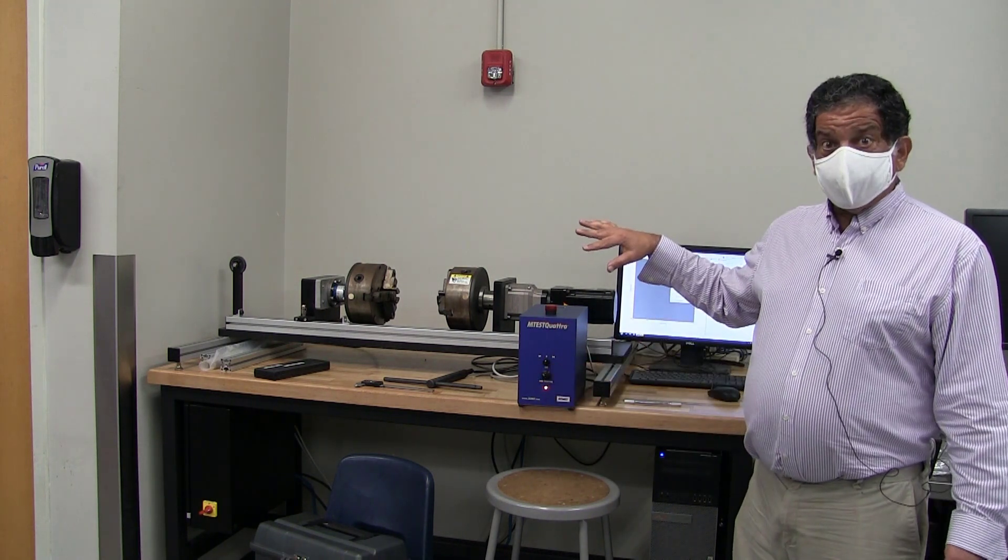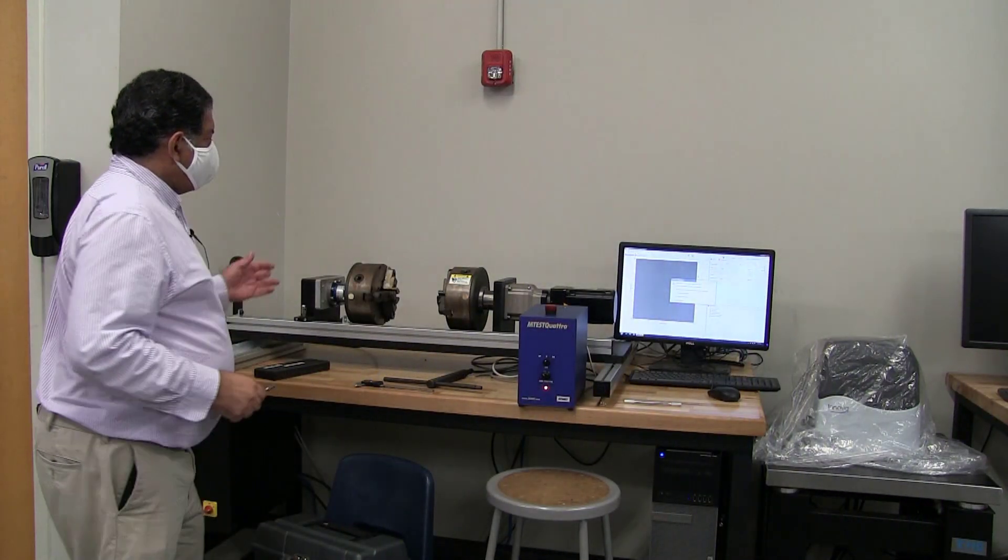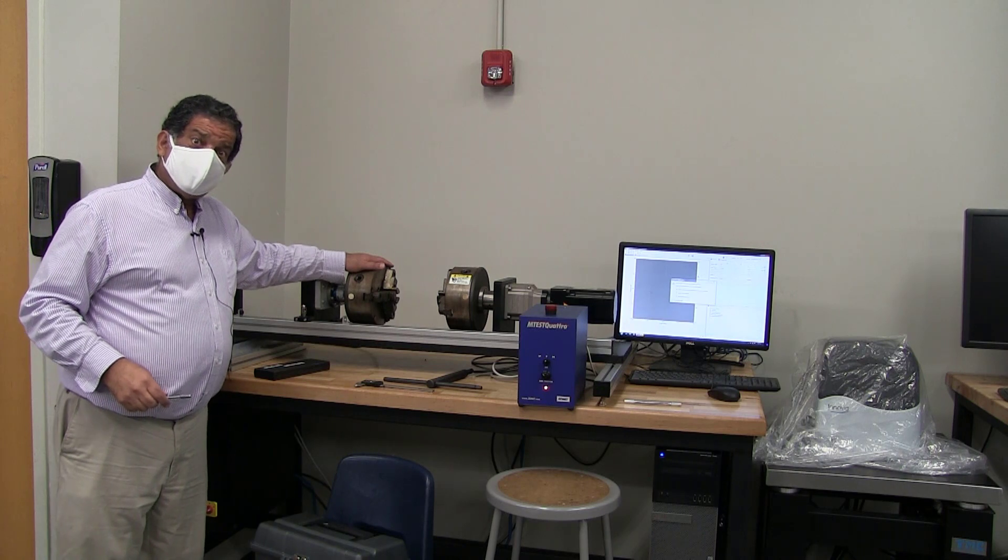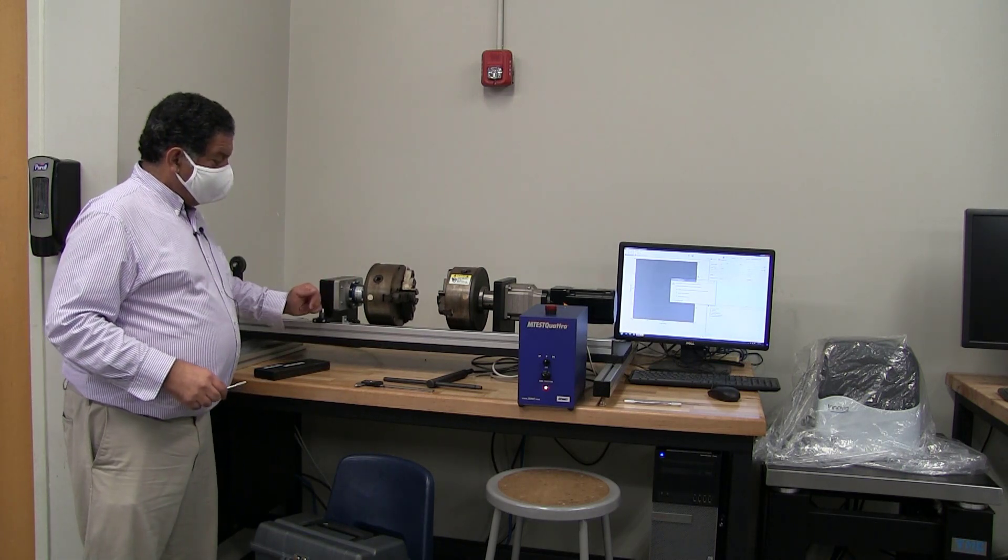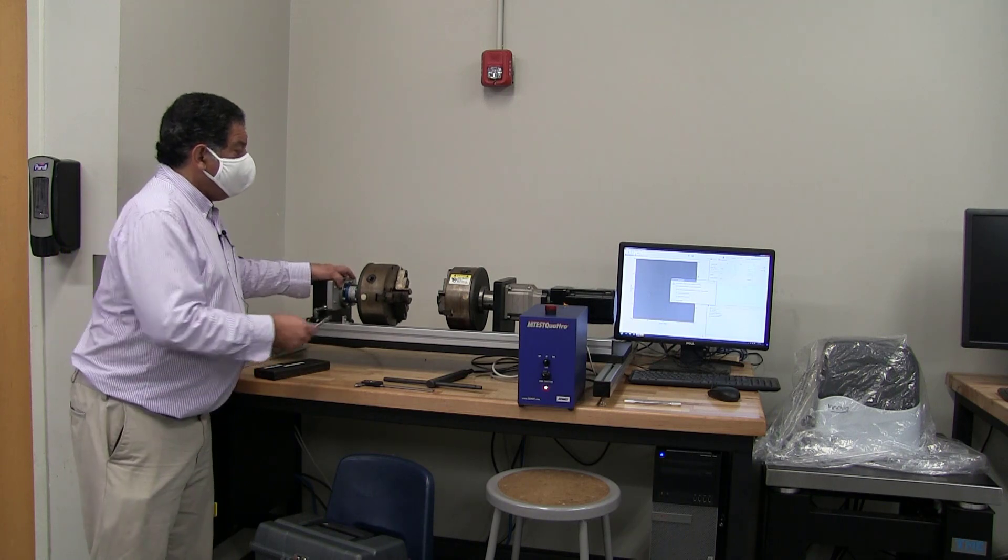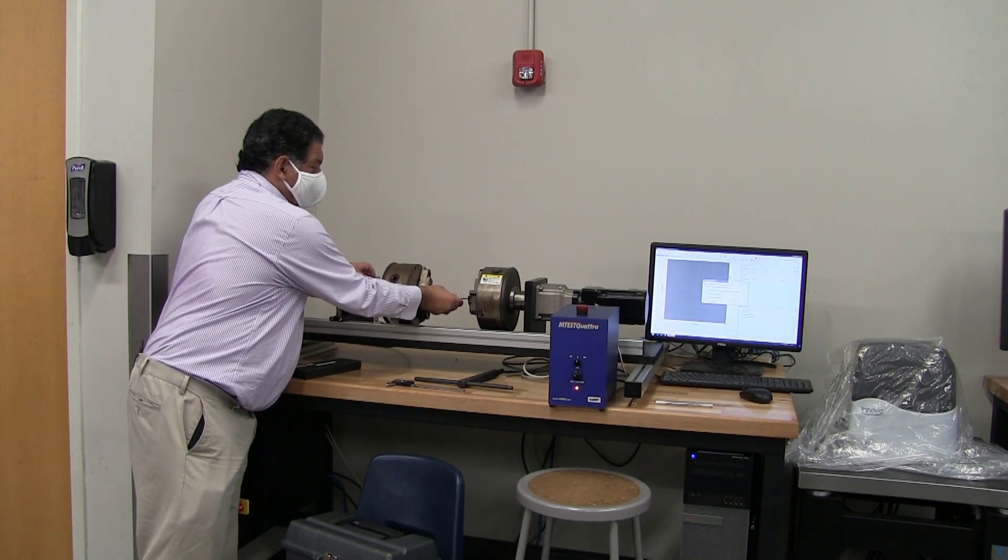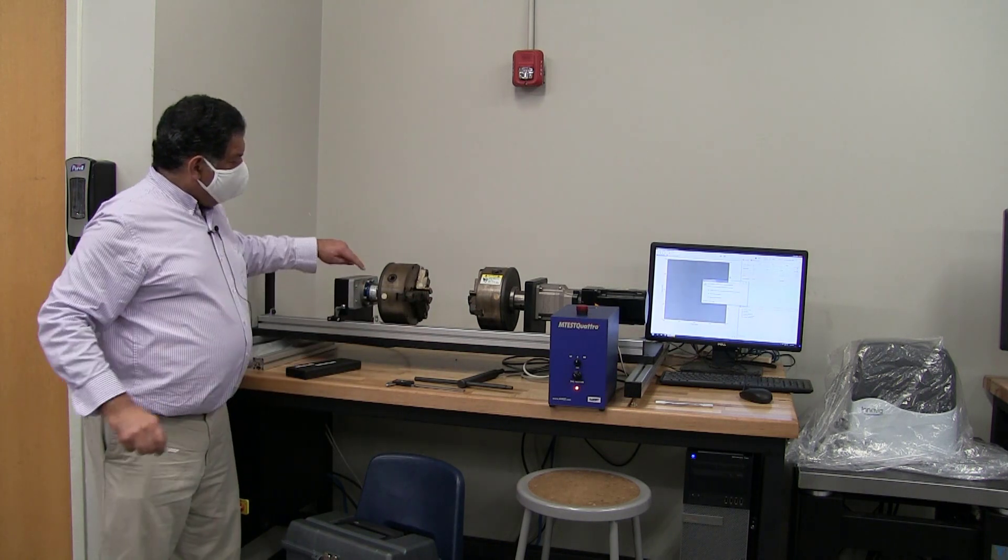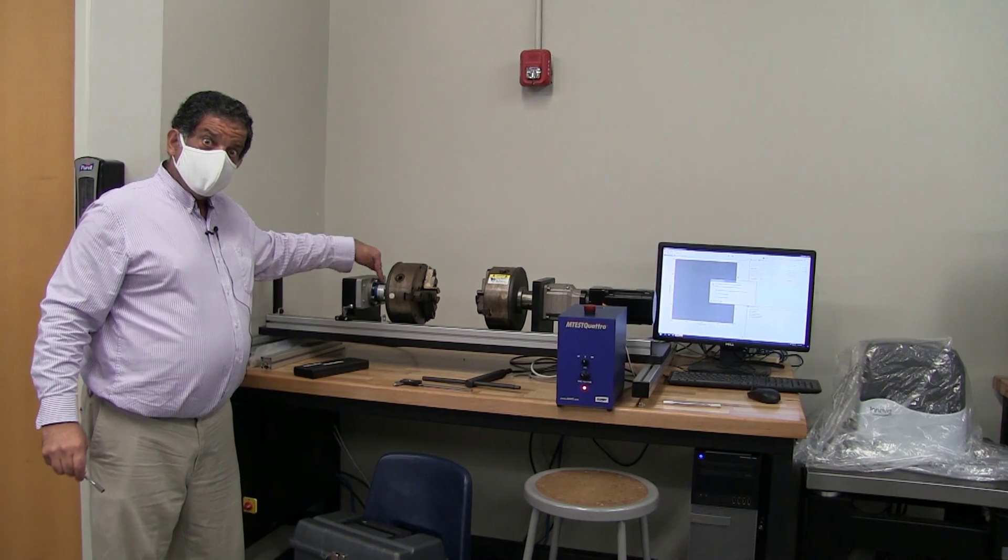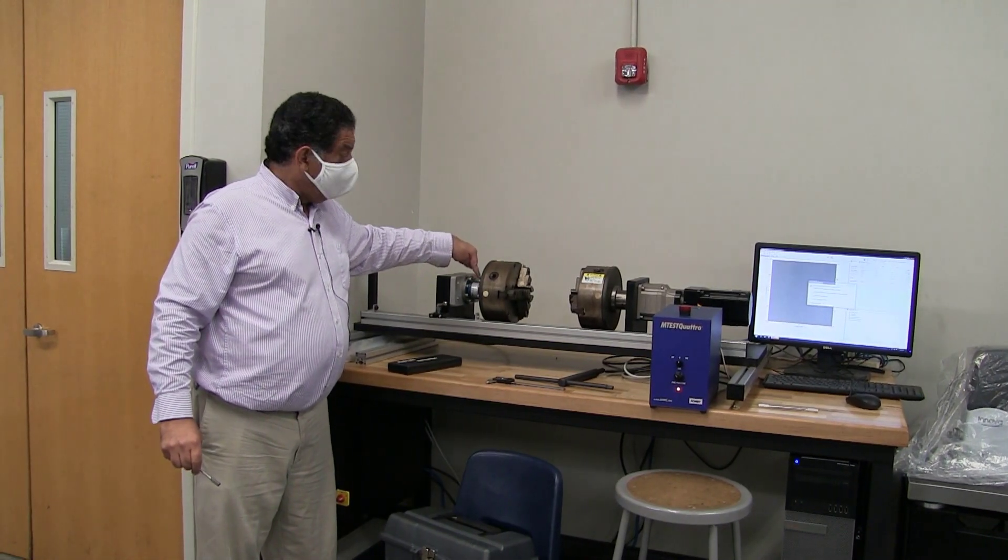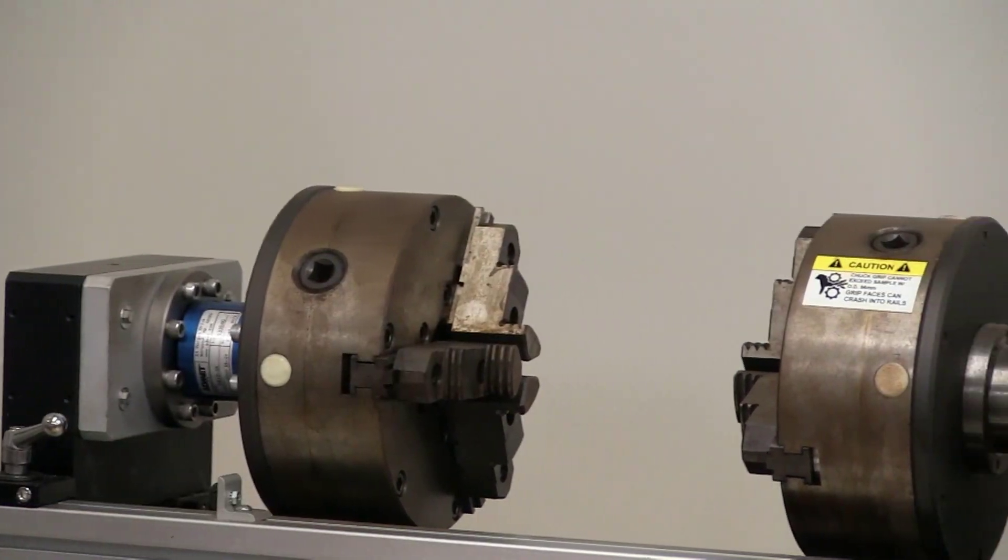I'm going to align those chucks. Of the two chucks, this side is the fixed side. It'll slide back and forth until I lock it with this lever. I can use this to move the chuck back and forth so that I can grab my specimen appropriately. Then you'll notice the load cell is located on this fixed side. This is what's going to be measuring the torque that is applied to the specimen.